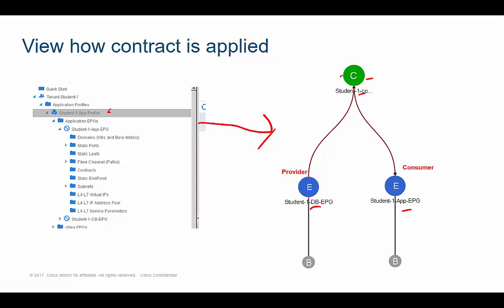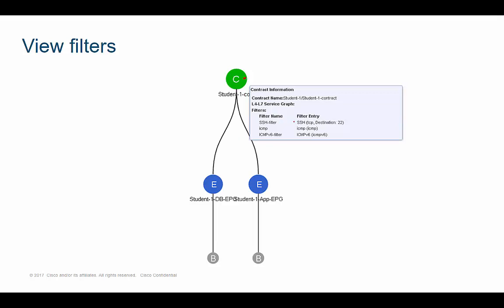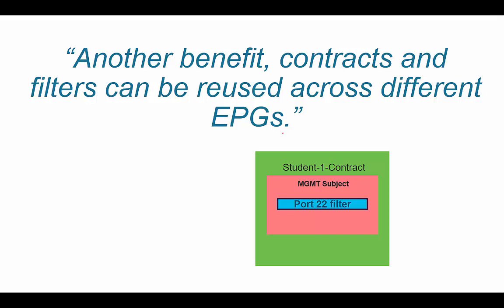You can also drag your mouse over the C icon and it shows you the different filters. Looking at this contract, I can see that devices in the App EPG should be able to send traffic to devices in the DB EPG on destination port 22, ICMP, or ICMPv6. Another benefit of contracts is that everything — contracts, subjects, and filters — can be reused between different EPGs. That's another advantage over ACLs.